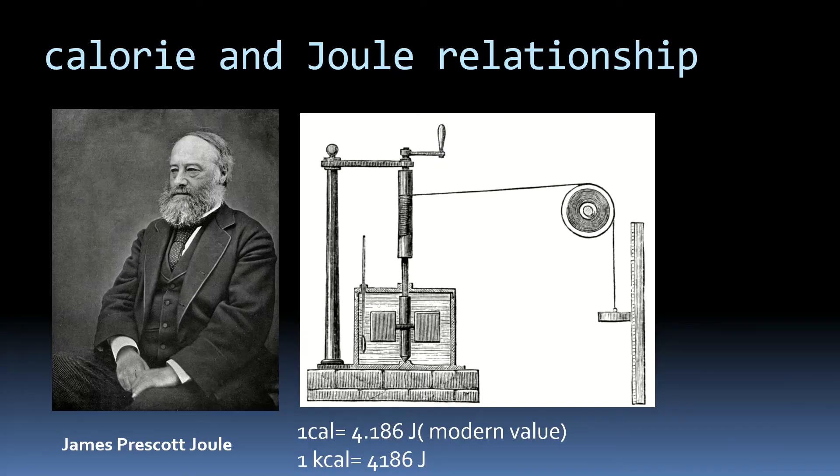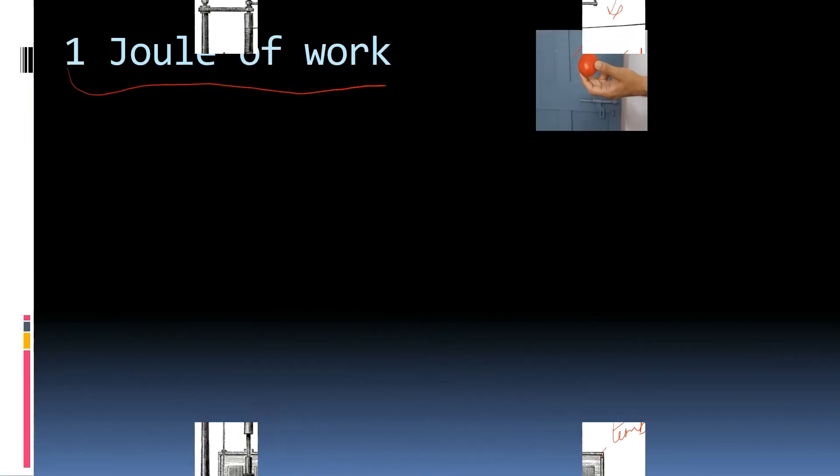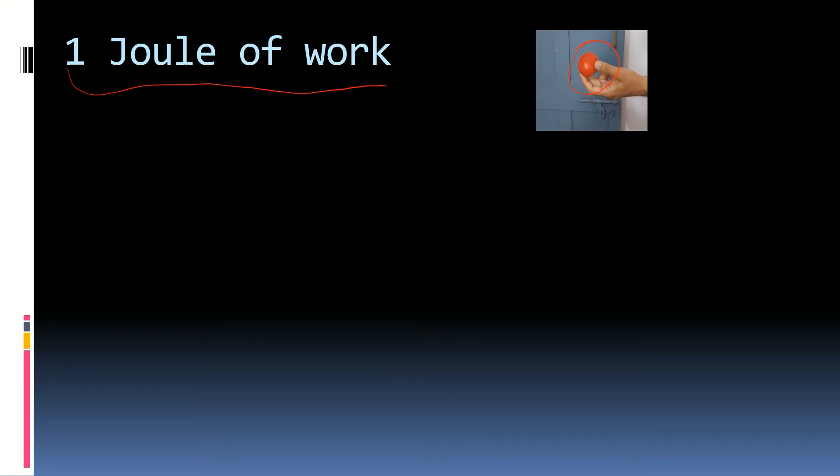James Prescott Joule conducted an experiment to derive the relationship between heat and work done. In fact, Joule proved that heat is energy. Before that heat was thought in terms of power or something like that. Joule conducted the experiment in an apparatus similar to the apparatus shown here. He dropped the weight from some height and the paddles rotated, which increased the water temperature. He found that 1 calorie is almost equal to 4.2 joules of work done.